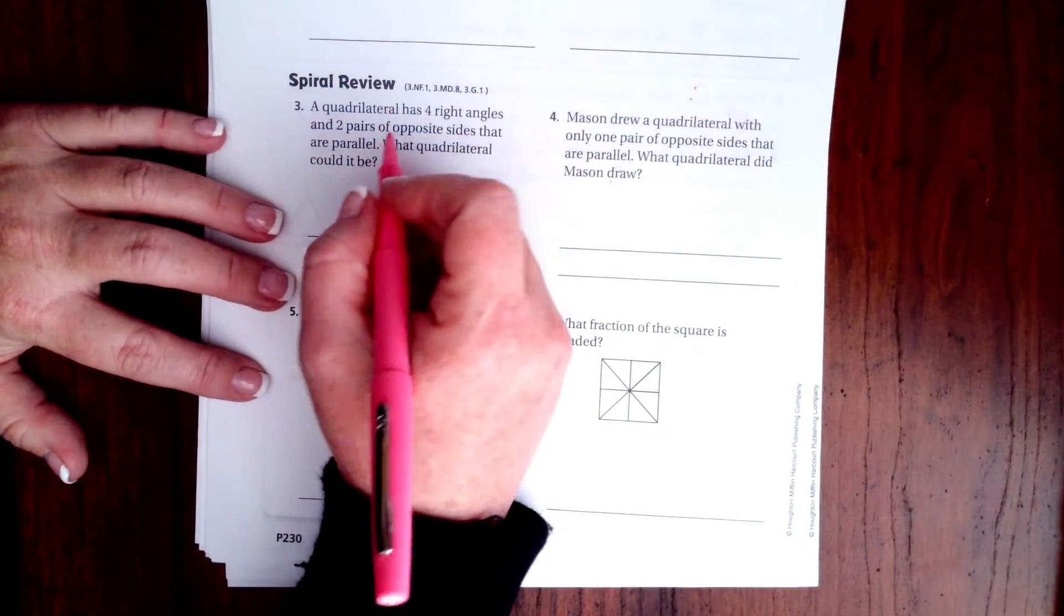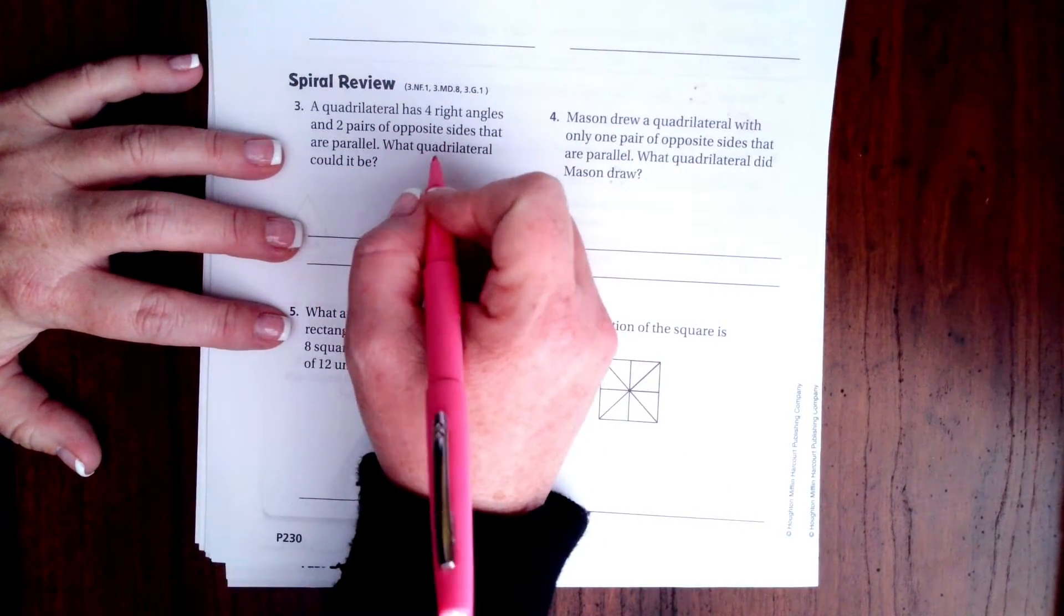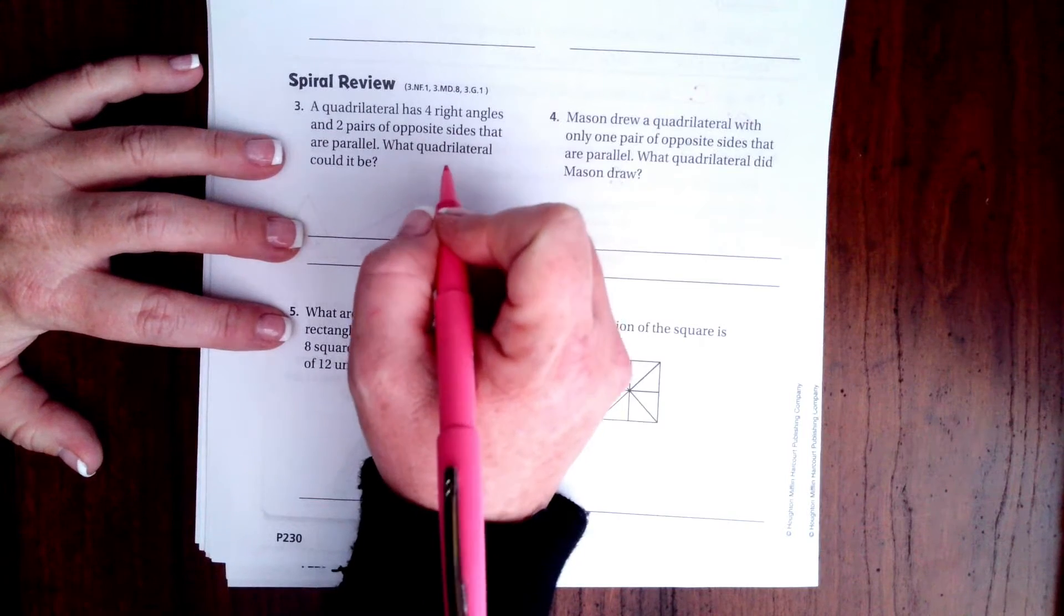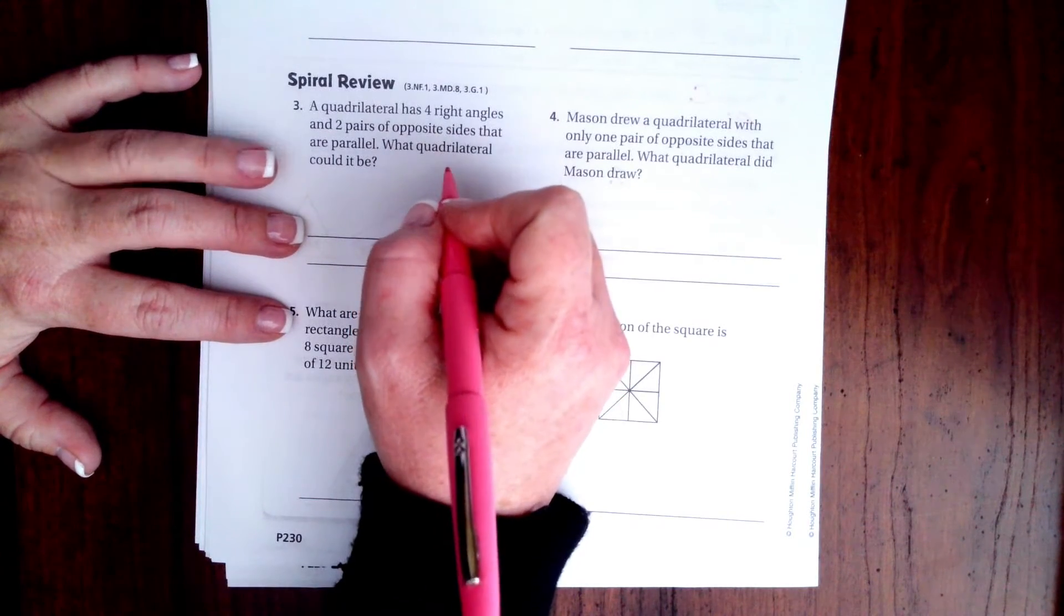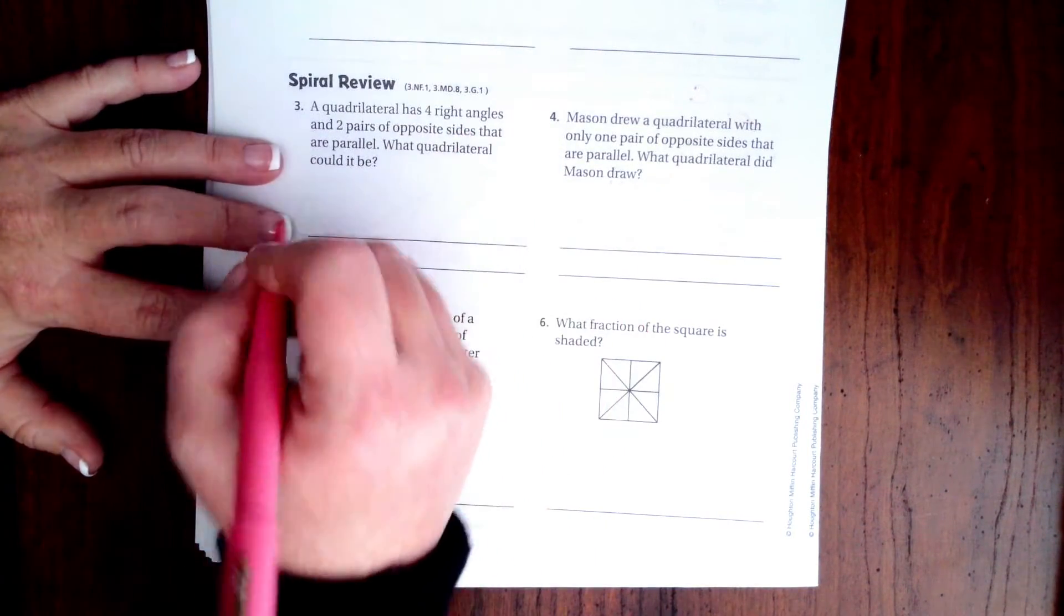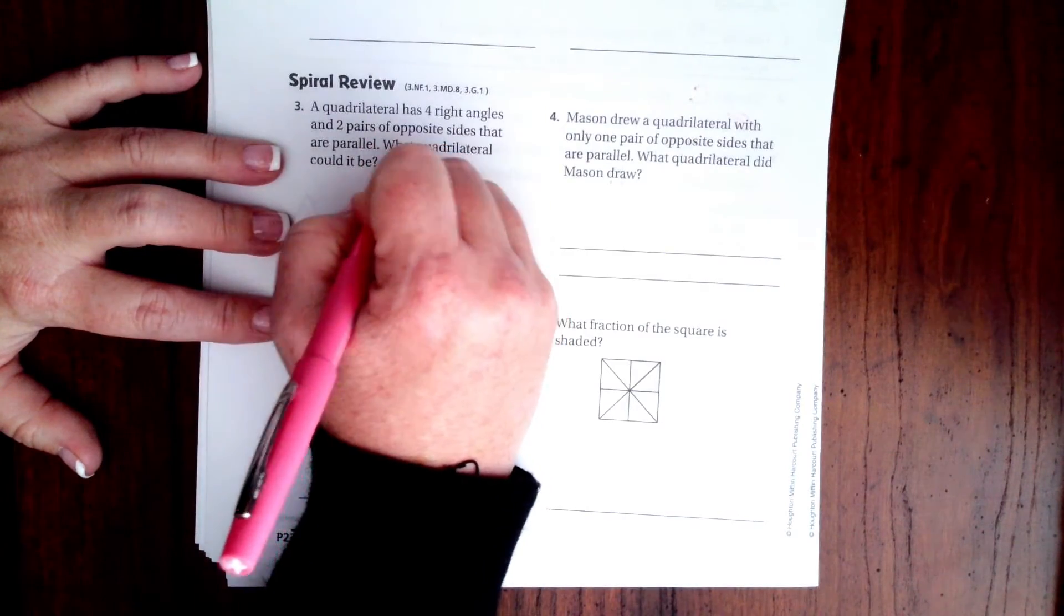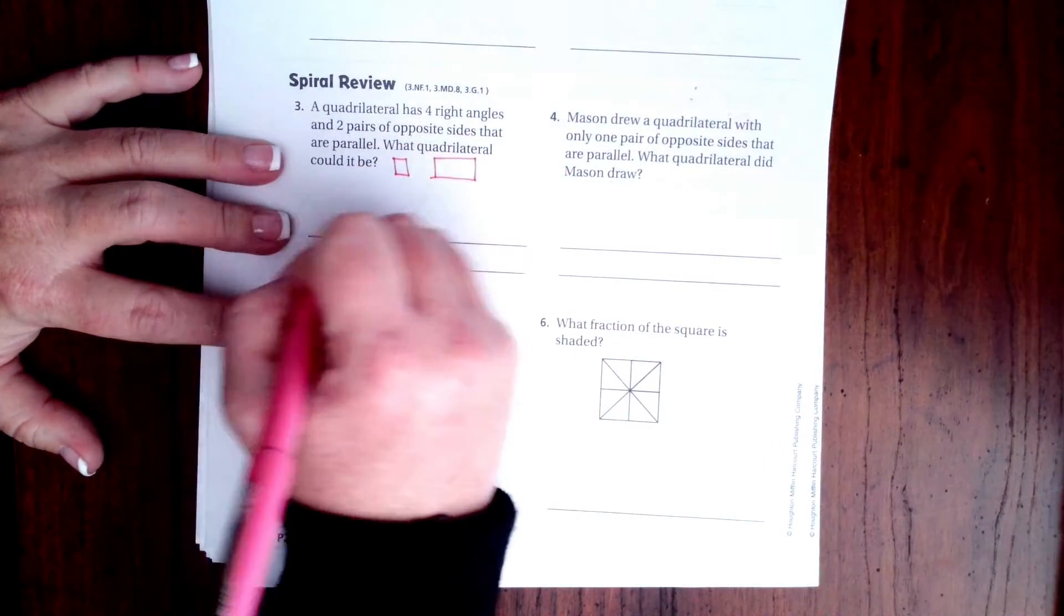It says a quadrilateral has four right angles and two pairs of opposite sides that are parallel. What quadrilateral could it be? So it could either be a square or it could be a rectangle.